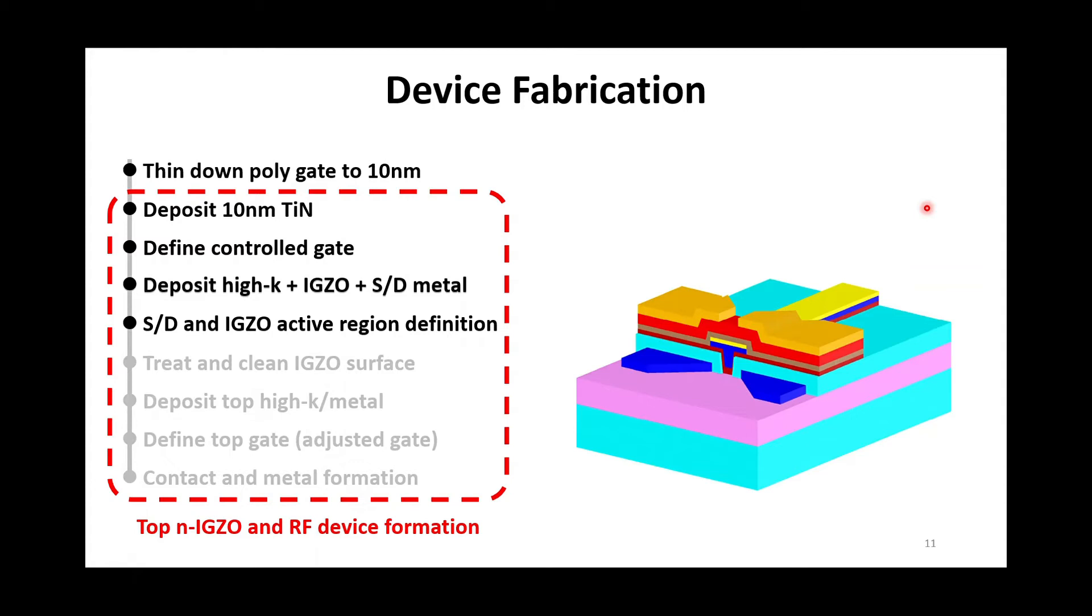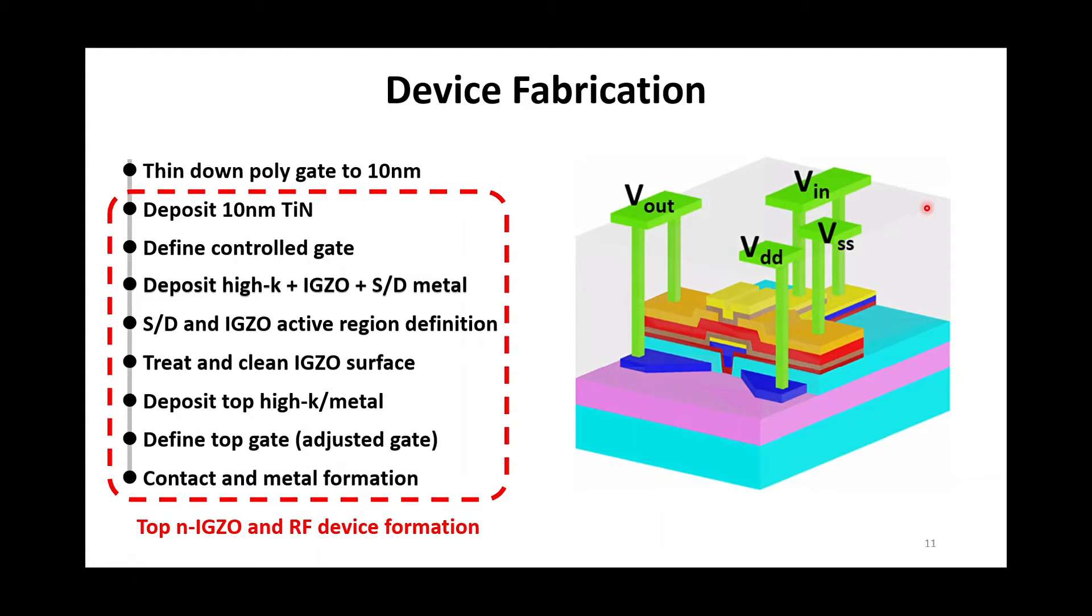Isopropanol was introduced to clean the surface of IGZO channels before top-gate stack deposition. Then a high-k and TiN were deposited by ALD and PVD, followed by a gate pattern as the top-adjusted gate. Finally, the contact and metal connection were formed for CFET inverter, SRAM, and RF devices.